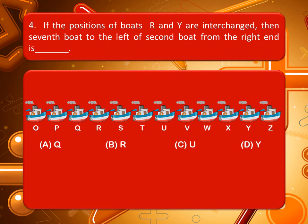Our next question: if the positions of boats R and Y are interchanged, then which is the seventh boat to the left of the second boat from the right end? Look at the picture very carefully and think about the correct answer. You can pause the video. The correct answer is D.